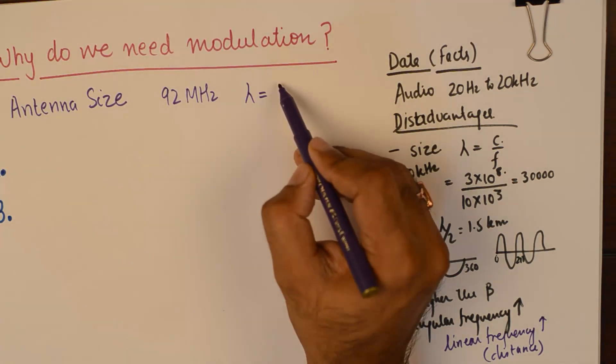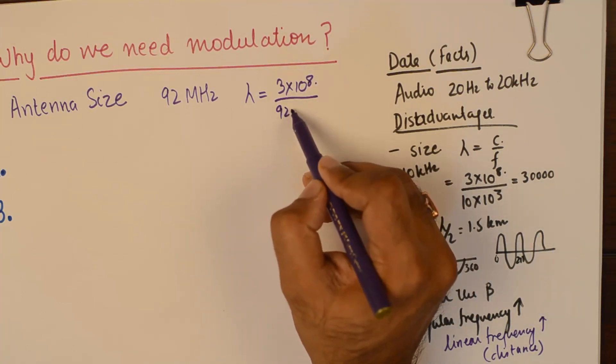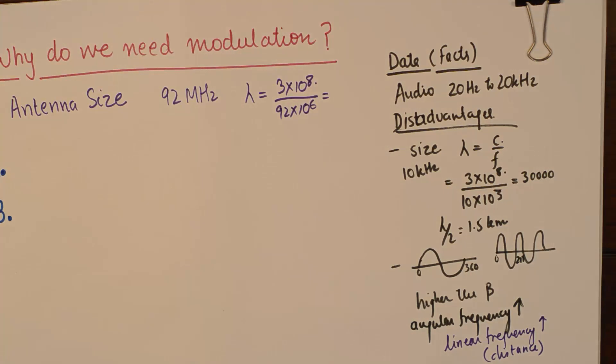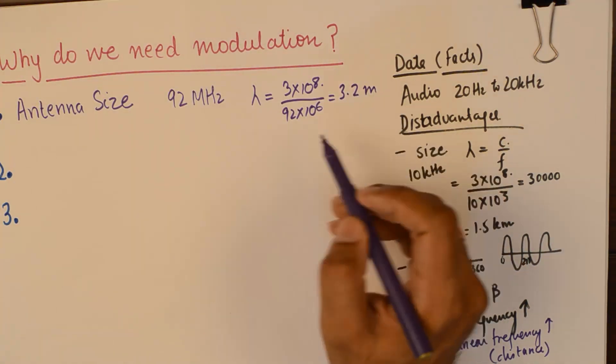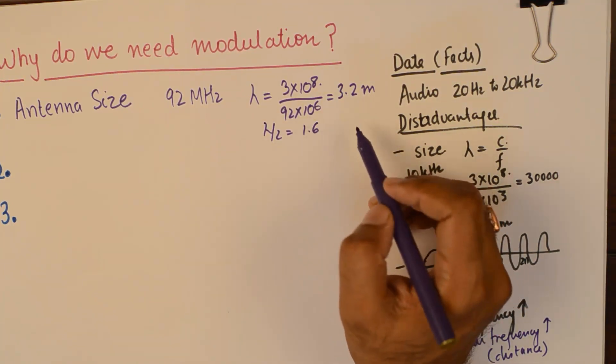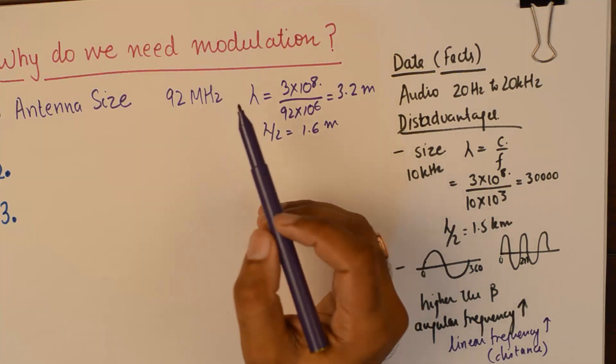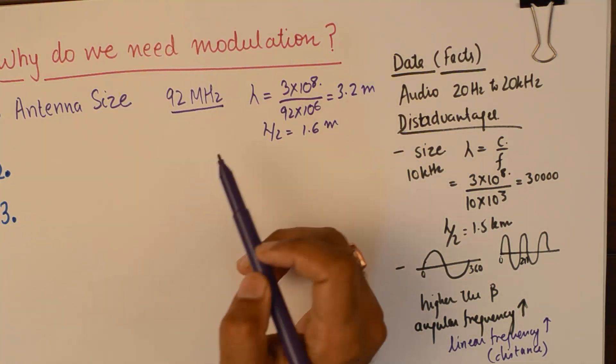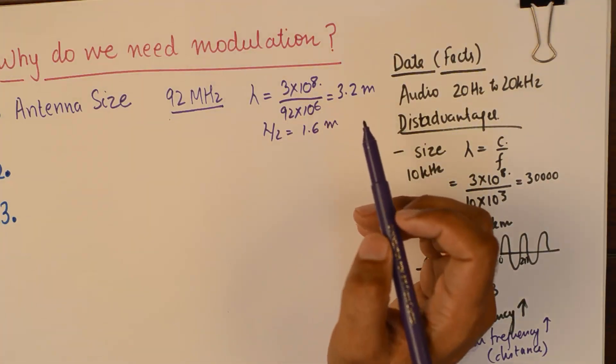If you calculate lambda for 92 megahertz, that will be 3 into 10 to the 8 upon 92 into 10 to the power 6. That is approximately 3.2 meters, and even if you take lambda by 2, which is more feasible to design, it's around 1.6 meters of antenna, which is practically possible to design.